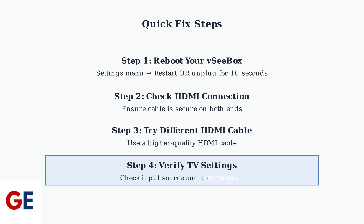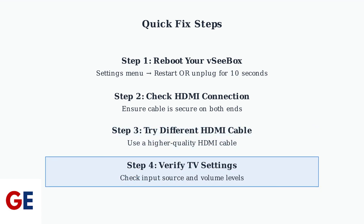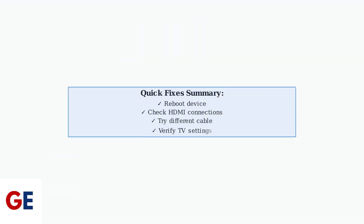Finally, verify your TV settings. Make sure your TV's input is set to the correct HDMI port, and check that the volume isn't muted on either the VC Box or the TV itself. These quick fixes resolve most common VC Box audio issues. If you're still experiencing problems after trying these steps, you'll need to explore more advanced audio settings and solutions.